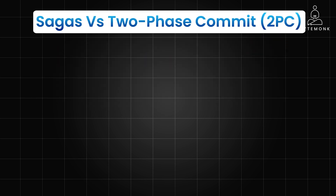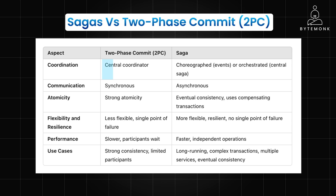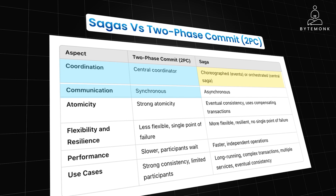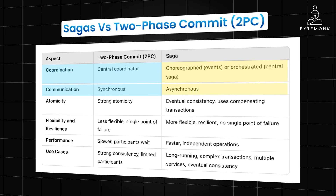While both sagas and two-phase commit aim to achieve consistency in distributed transactions, they differ significantly in their approaches and underlying mechanisms. 2PC relies on a central coordinator to orchestrate the transactions, collecting votes and deciding whether to commit or roll back. In a saga, it can be either choreographed — where participants communicate directly through events — or orchestrated, where a central saga orchestrator manages the flow. Choreographed sagas don't have a single point of control like 2PC.